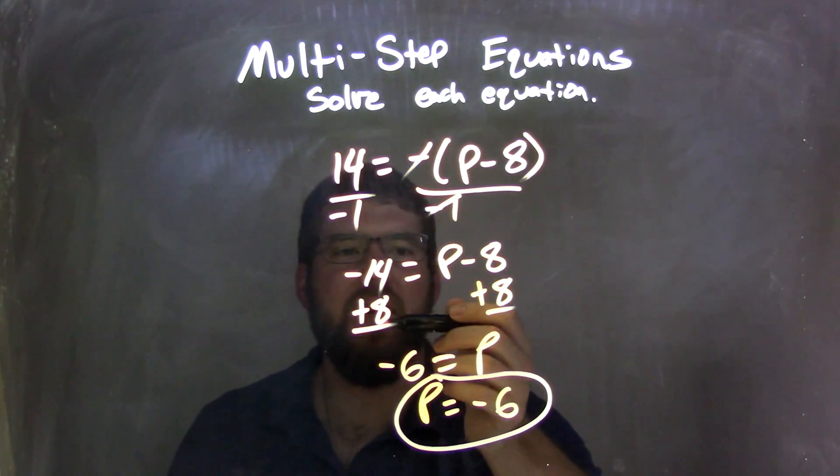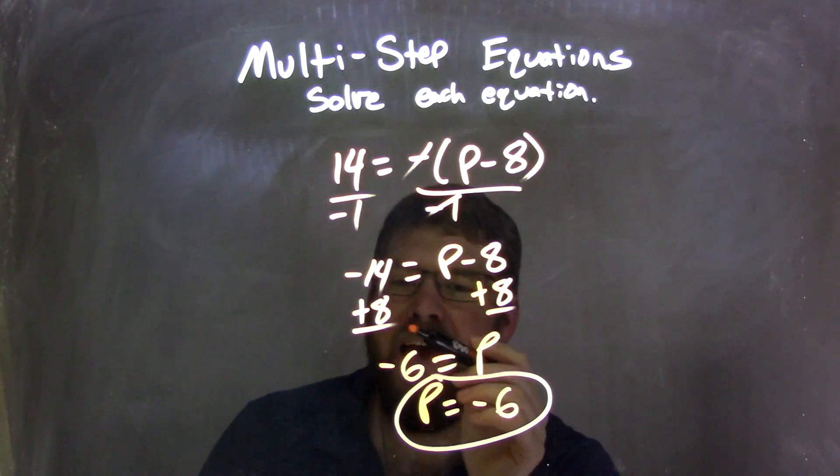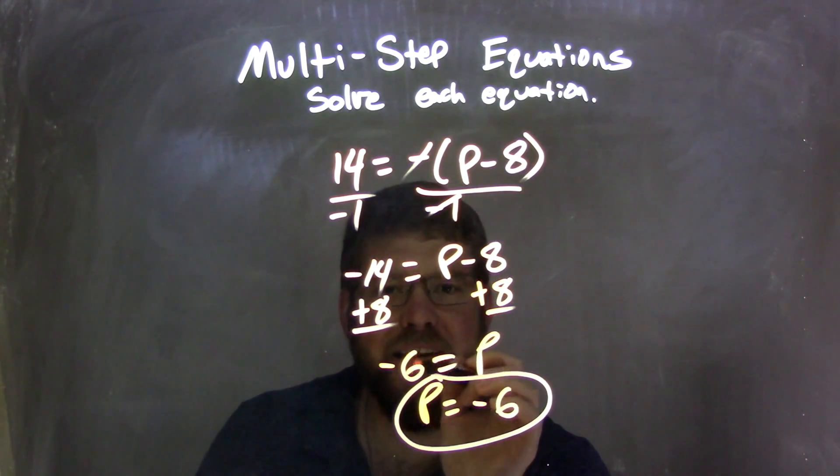Then I had to add an 8 to both sides, leaving just a p. Now negative 14 plus 8 comes out to be a negative 6.